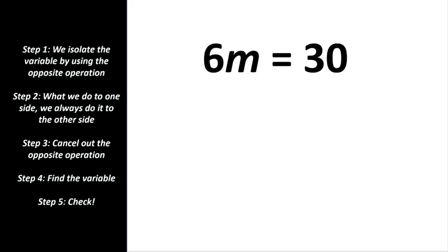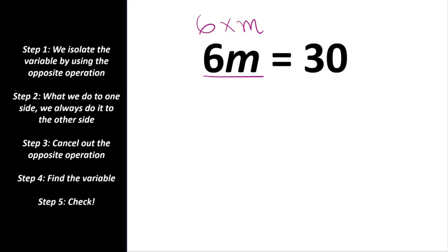Our first example is 6m equals 30. 6m means 6 times m. We need to isolate the variable by using the opposite operation. We are multiplying the variable by 6, so the opposite of multiplying is dividing. We are going to divide the variable by 6.